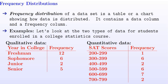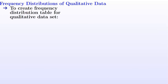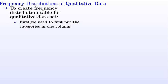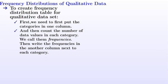Now let's look at how to create frequency distributions of qualitative data. To create a frequency distribution table for a qualitative data set, first we need to put the categories in one column, then count the number of data values in each category — which we call frequencies — and write the frequencies in another column next to each category.